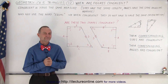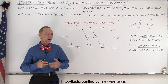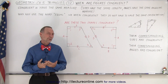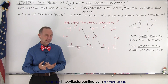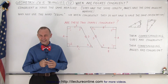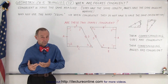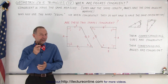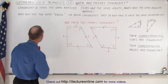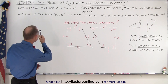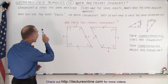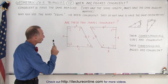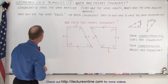Welcome to my Lecture Online. So when are figures congruent and what does the word congruent really mean? We're not used to using that word — it's kind of a foreign word unless you're working with geometry. It has a very specific meaning: congruent means that they have the same measure — the sides have the same length and the angles have the same angular measure.